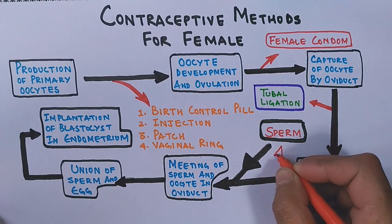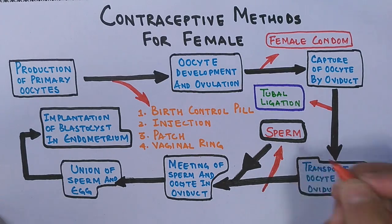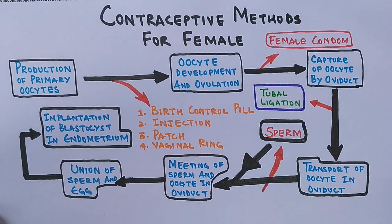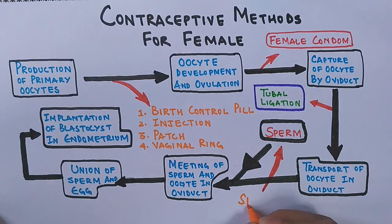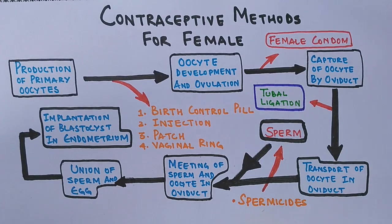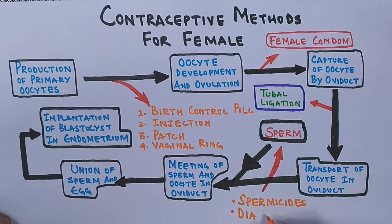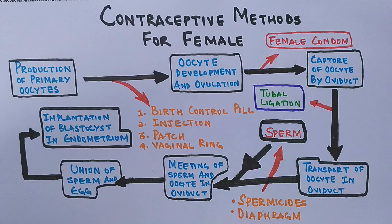Then there is a chemical method to control pregnancy — a chemical which kills sperm cells called spermicide. It is used along with the diaphragm, which is a soft dome made of latex or silicone.